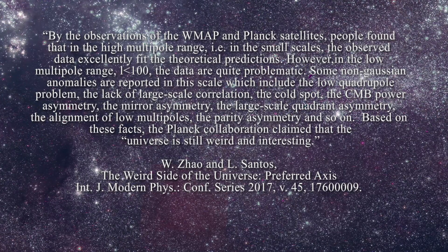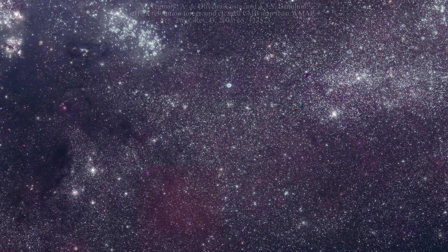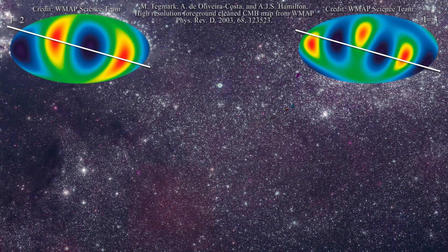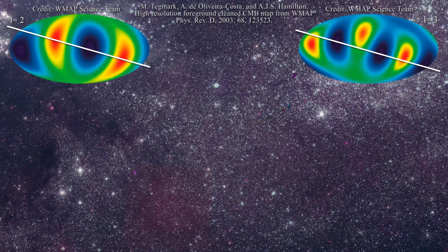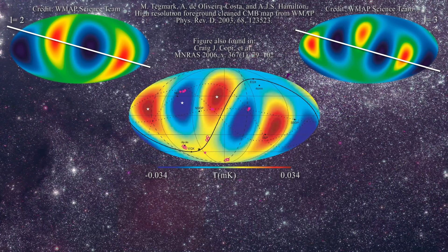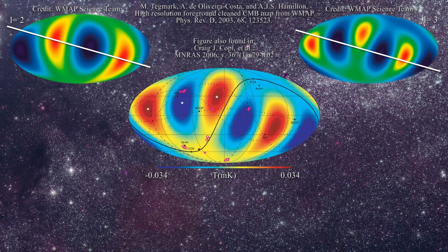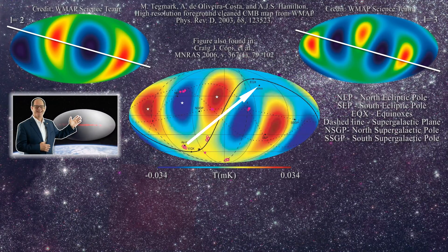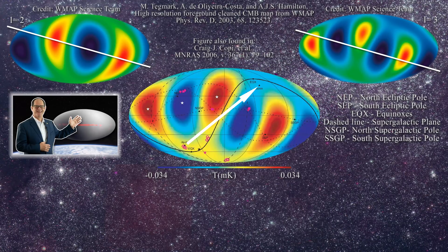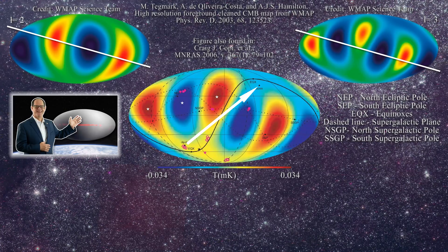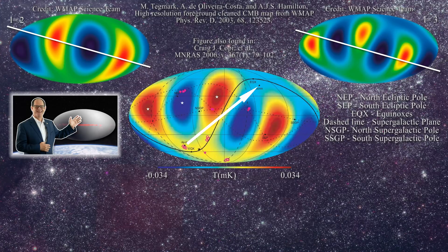When the WMAP data was first released, Professor Tegmark's laboratory soon reported, using their own methods, that the positions of the quadrupole and octupole axes were aligned with the geometry and direction of motion of the solar system. The WMAP quadrupole is shown in the figure on the upper left and the octupole is displayed on the upper right. Here is the key figure from Professor Tegmark's paper. The solid line is the ecliptic plane, which is the plane of the Earth's orbit and most of the planets around the Sun. Here is the direction of the dipole. It is evident that the dipole is essentially aligned with the ecliptic. You might recognize that the main direction of the quadrupole and octupole are orthogonal to the ecliptic plane, as discussed in numerous papers.